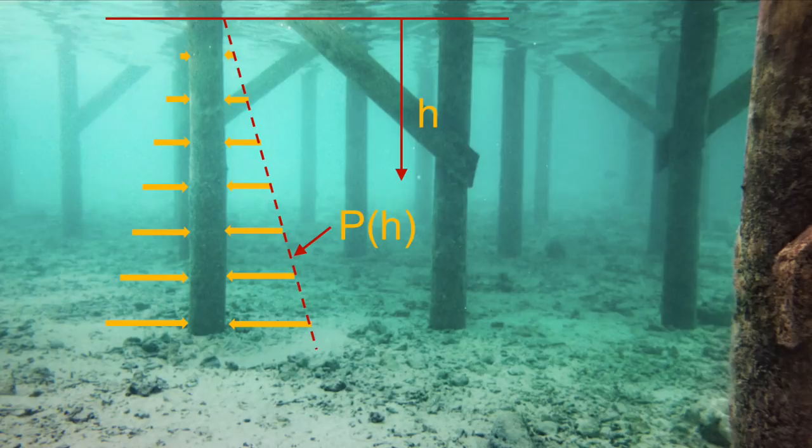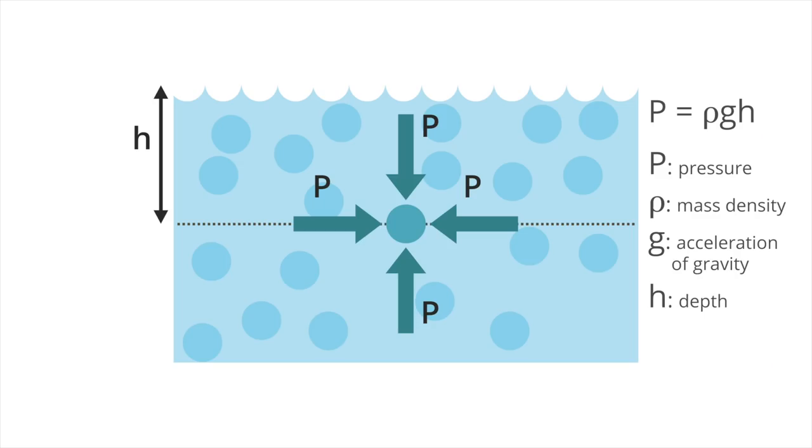As we showed in one of our other videos, the hydrostatic pressure P on a submerged surface increases with depth. More specifically, it is given by the formula P equals ρgh, where ρ is the mass density of the liquid, g is the acceleration of gravity, and h is the height or depth of the water above the point we are considering.